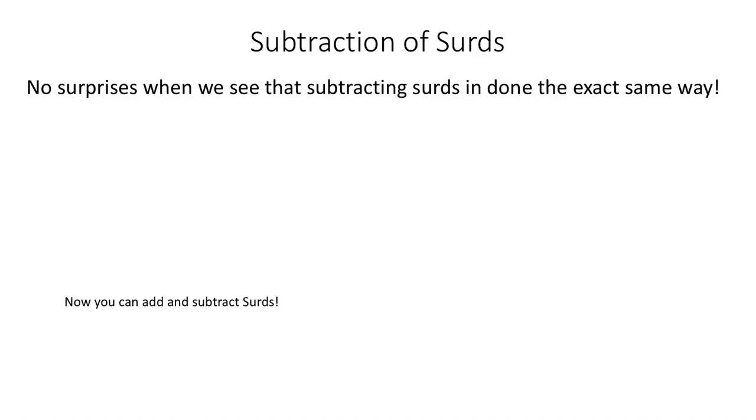There shouldn't be any surprises that subtraction of surds is done in almost exactly the same way. If I've got 4 root 3, and I take away root 3, then I'm left with 3 root 3.